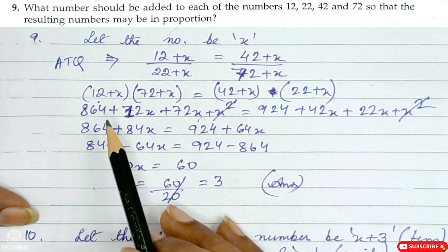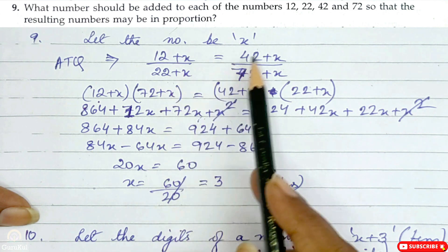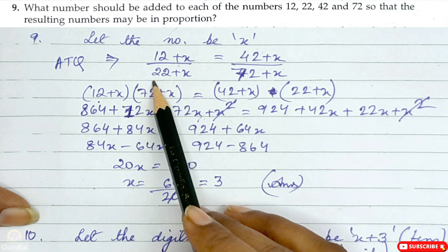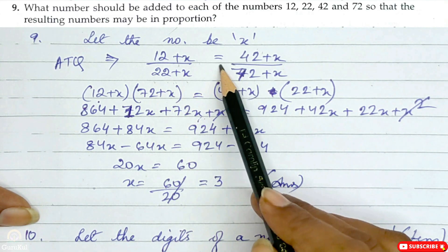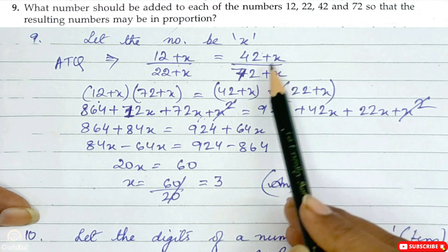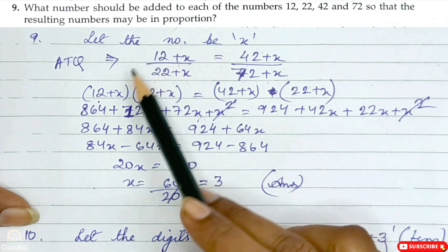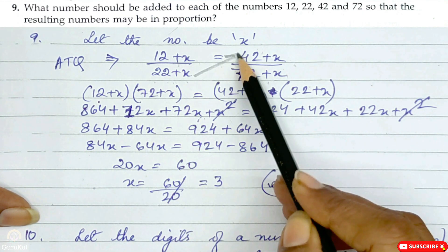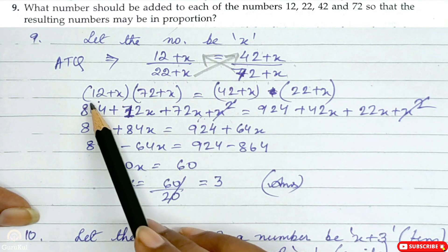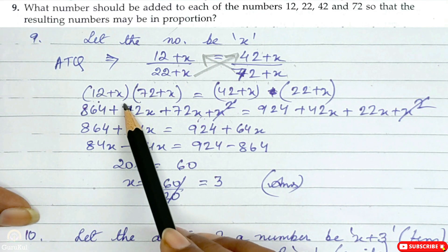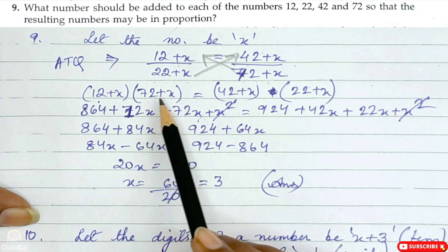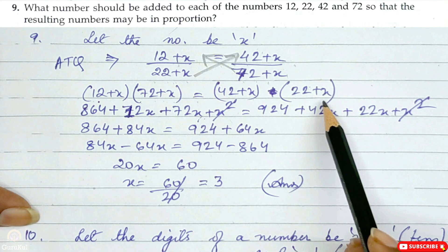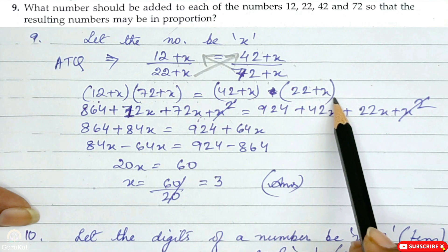We add x to 12, 22, 42, and 72. The proportion gives: (12 plus x) over (22 plus x) is equal to (42 plus x) over (72 plus x). This is our equation. We cross multiply directly.